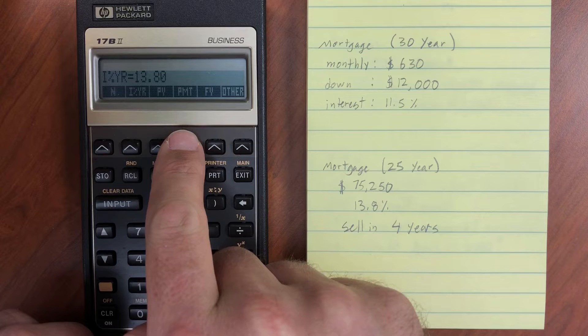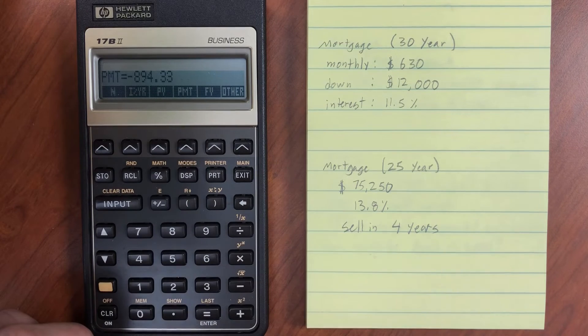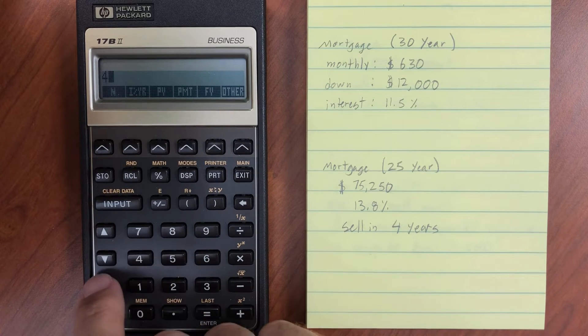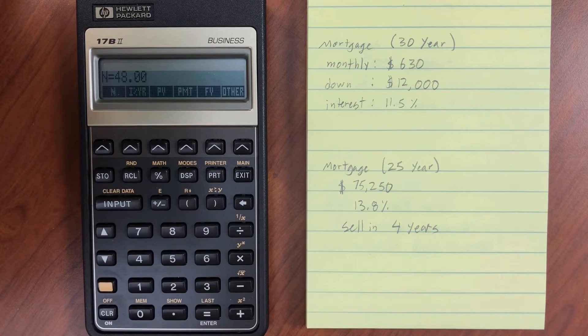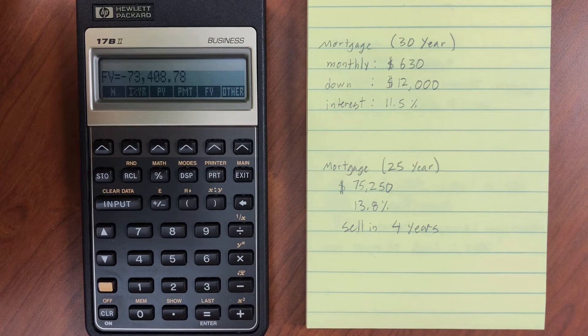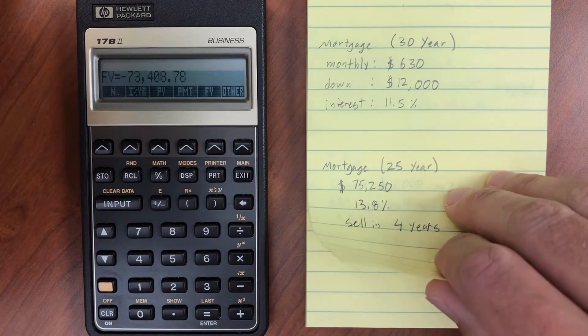And then if I calculate my payments, it's going to be $894 per month. Now, if I go ahead and turn that around in four years, I'm going to set my period now to four years, 48 periods. And then calculate the future value. So $73,408 is the value that we would be able to sell it for at that point. Kind of depressing.